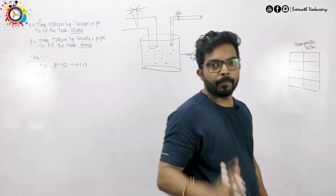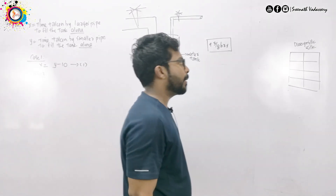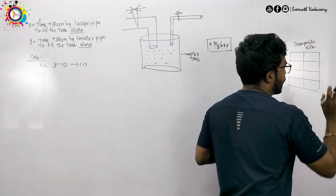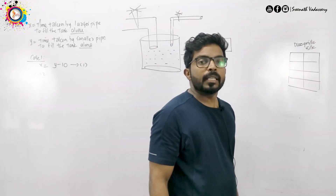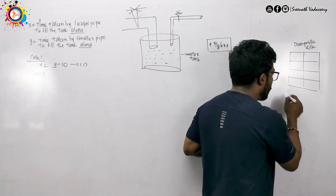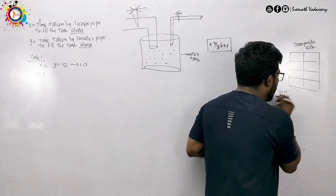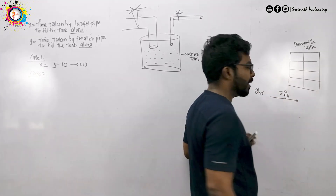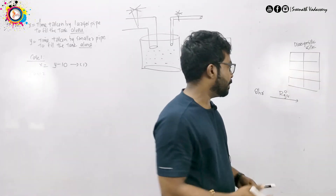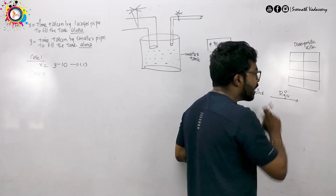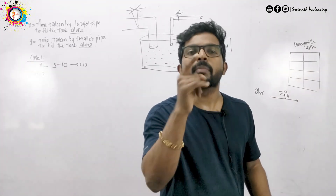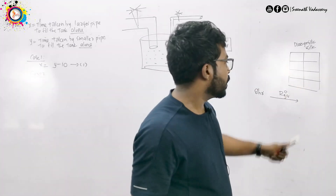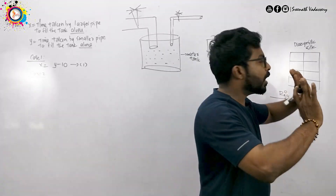I am going to do 8 pieces — 8 squares: 1, 2, 3, 4, 5, 6, 7, 8 — 8 pieces. If you do 8 pieces, you can do 8 pieces. I am going to do 8 pieces of 1. What I am going to do with 8 pieces is the first piece of the 1 piece.